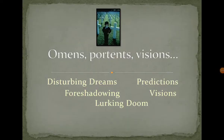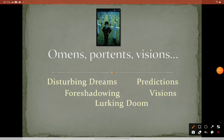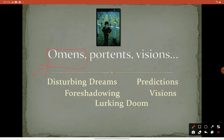Gothic literature is also ominous — meaning something that makes you feel unstable or in a very irritating mood, like disturbing dreams. You predict something bad: foreshadowing of events to come, as in Macbeth with its visions. And of course, there are gloomy visions and lurking doom — curses — which are one of the prominent characteristics of this type of literature.